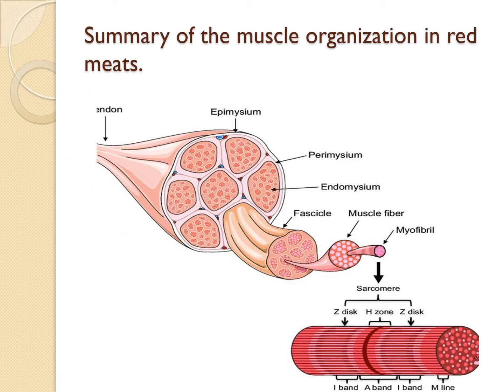Let's look at the summary of muscle organization in red meat. The structural components and organization into muscle begin with the myofilament, which is thick — that is myosin — and thin, which is actin. Then the sarcomere, which is organized myofilament that forms bands: Z-lines, I-band, H-band, and A-band.